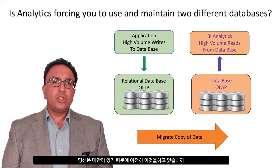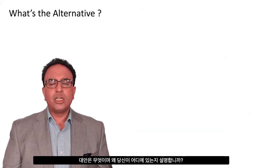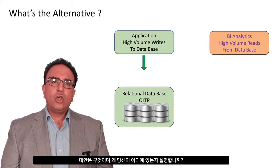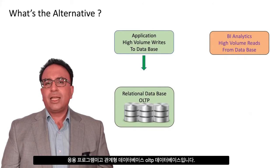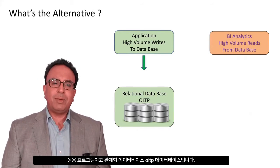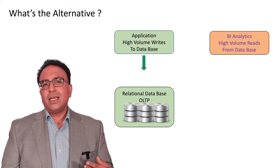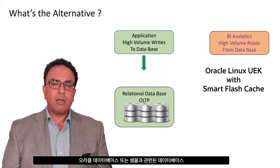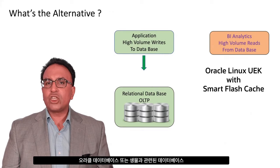So, are you still doing this? Because if you are, there is an alternative. If you look at what I just described — where you've got high volumes of writes going to a database from your front-end application and it's a relational OLTP database — then one of the things you can think about doing is actually underpinning your Oracle database or your non-Oracle relational database with Oracle Linux UEK with something called Smart Flash Cache.